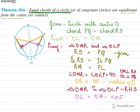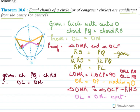So what have I proved? It was given that the chords were equal — chord PQ equals chord RS — and therefore I could say the distances were equal: OL equals OM. So PQ equals RS was given, and I proved OL equals OM.